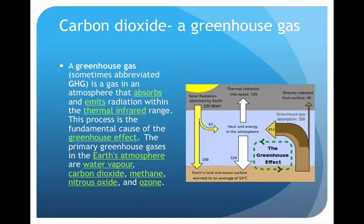Carbon dioxide is a greenhouse gas, sometimes abbreviated GHG. That's a gas in the atmosphere that absorbs and emits radiation within the thermal infrared range. This process is the fundamental cause of the greenhouse effect. The primary greenhouse gases in Earth's atmosphere are water vapor, carbon dioxide, methane, nitrous oxide, and ozone.